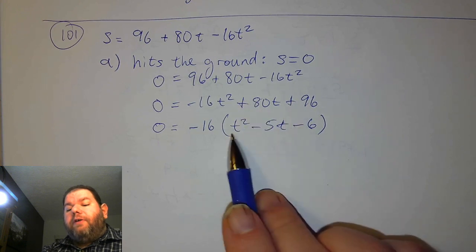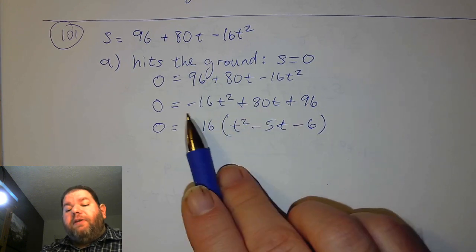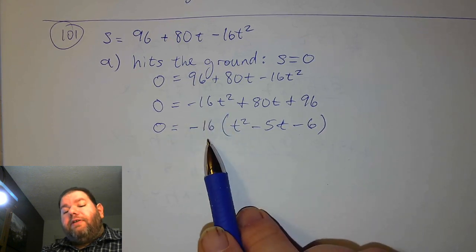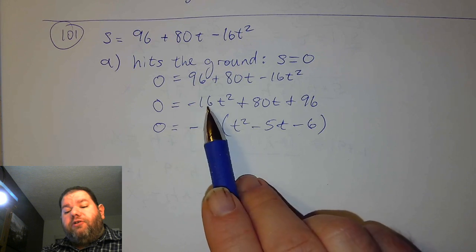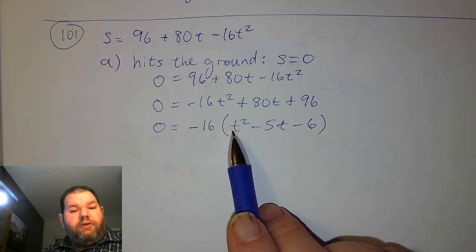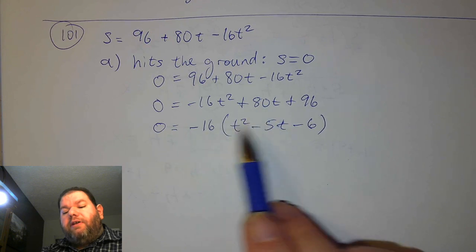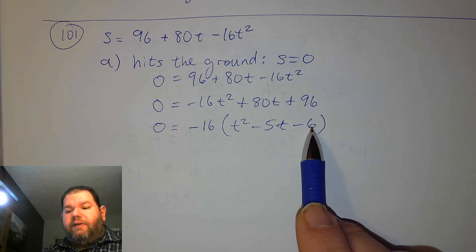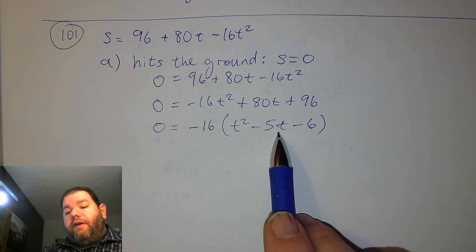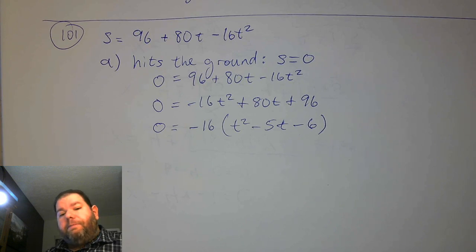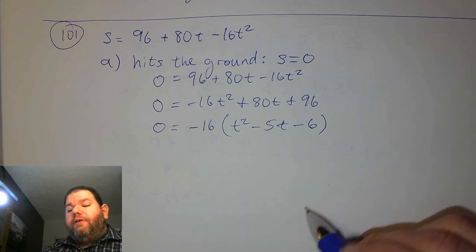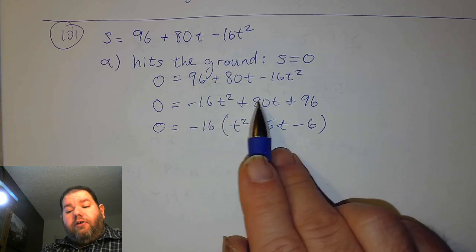We look at 16, 80, and 96 and think about common factors. It turns out that 16 is the common factor. Factoring out a negative changes all three signs — positive, negative, negative — and factoring out 16 leaves t squared. 80 divided by 16 is 5. 96 divided by 16 is 6. So we have t squared minus 5t minus 6 inside the parentheses.